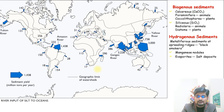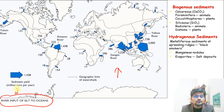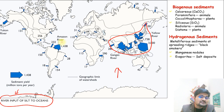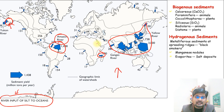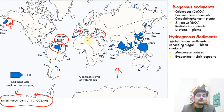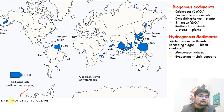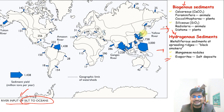Looking at the world distribution map, river input is the maximum contributor to ocean deposits. The eastern portion of Asia and Southeast Asia has the maximum input. Then you have the northern portion of South America from the Amazon River, the Yukon River in northwestern Alaska, certain areas in Africa, and parts of the Mediterranean. These are the major contributors of sediments through rivers to the oceans of the world.